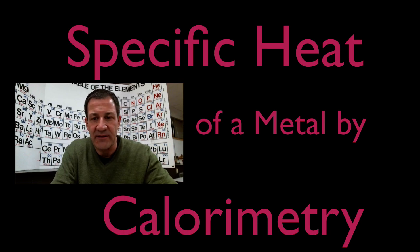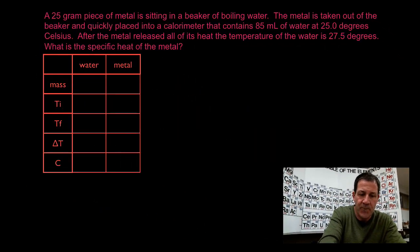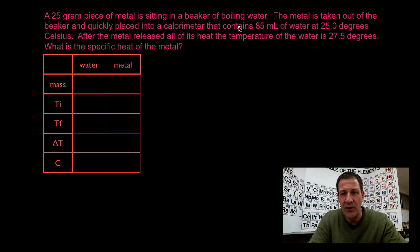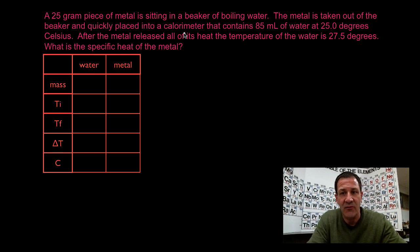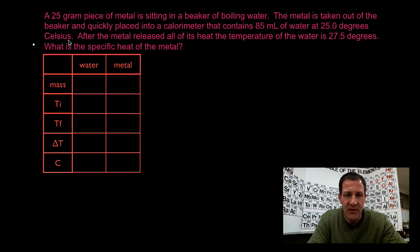In today's video I'm going to go over how to calculate the specific heat of metal by calorimetry. Here is the question we're going to try to answer. We have a 25 gram piece of metal sitting in a beaker of boiling water, and the metal is taken out of the beaker and quickly placed into a calorimeter that contains 85 milliliters of water at 25 degrees Celsius. After the metal has released all of its heat, the temperature of the water is 27.5 degrees Celsius, and we want to know what is the specific heat of the metal.